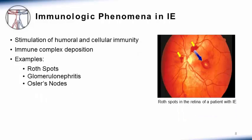Immunologic phenomena occur in infective endocarditis because it causes stimulation of humoral and cellular immunity. This can lead to immune complex deposition in areas such as the retina, termed Roth spots, pictured here. Kidneys, termed glomerulonephritis, and in the periphery, called Osler nodes.